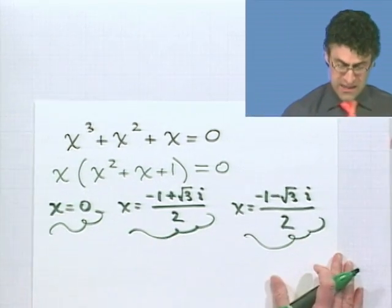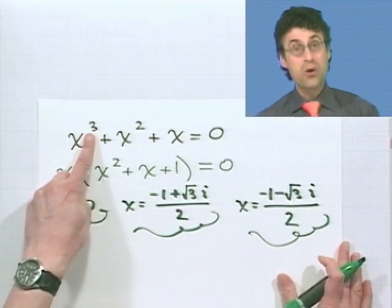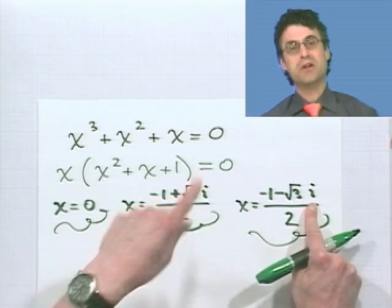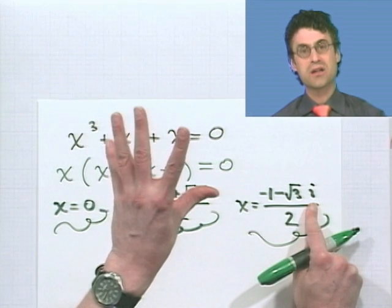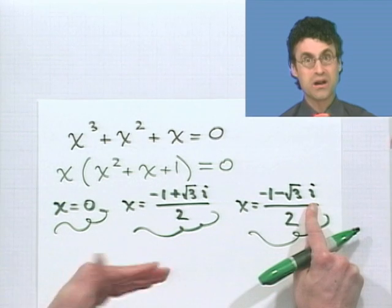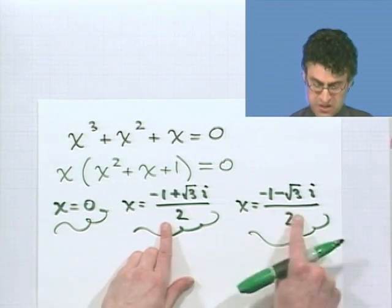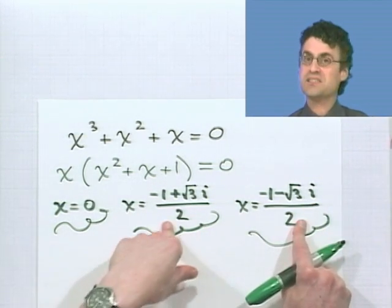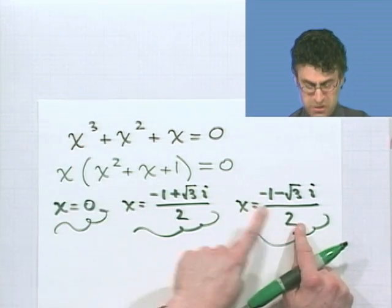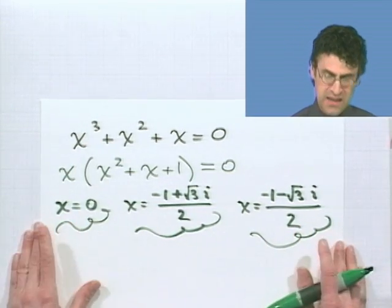And so, we again see three solutions. Notice that some of them are actually imaginary, which is exactly what was asserted. That if you have any polynomial equation with complex numbers, then you will always have at least one complex solution. In this case, we actually see two complex solutions. But as a consequence, an important consequence is, if the degree is 3, there should be three solutions. That is the power of the fundamental theorem of algebra.